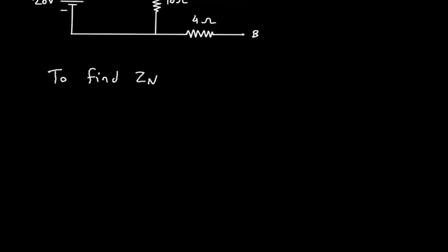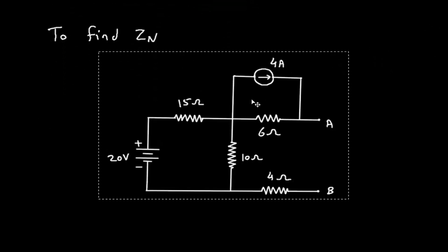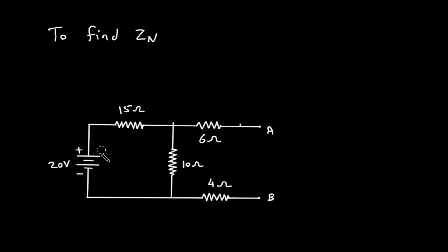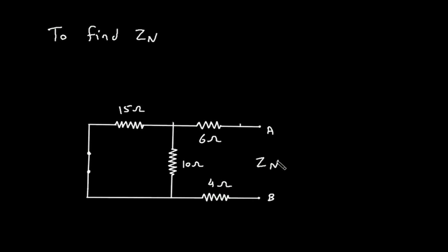Now to find Zn, we will turn off this current source, so it will be open circuited, and we will turn off this voltage source, so it will be short circuited. Now this will be our Zn, that is Norton's equivalent impedance.